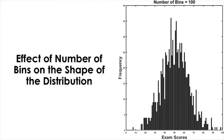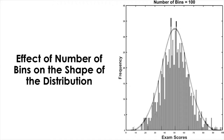And if we keep dividing the range finer and finer, then it'll look smoother and smoother to the point where the outline of the histogram forms a smooth, continuous curve when the bin size approaches zero. And then the curve is called a probability density curve. And when the curve has the following features, we call the curve a normal distribution curve.